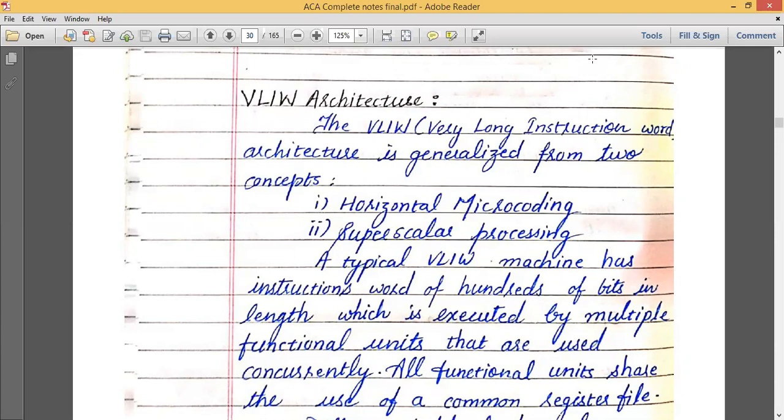So VLIW, this is an abbreviated form of very long instruction word architecture. It is actually a special case of processor which is generalized from two concepts: first one is horizontal microcoding and second one is superscalar processing.